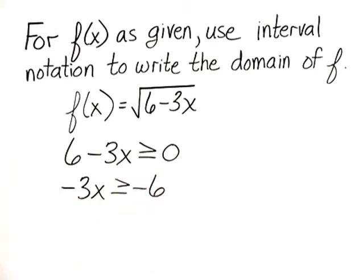If negative 3x is greater than or equal to negative 6, dividing both sides by negative 3 and reversing the direction of the inequality symbol would give us x is less than or equal to 2.